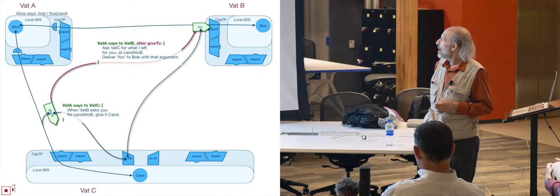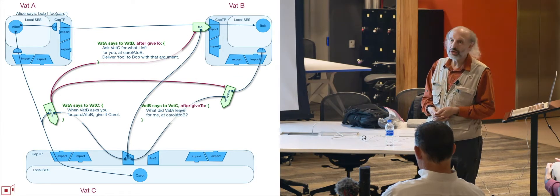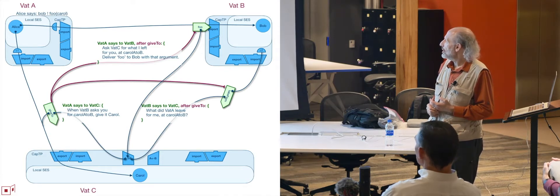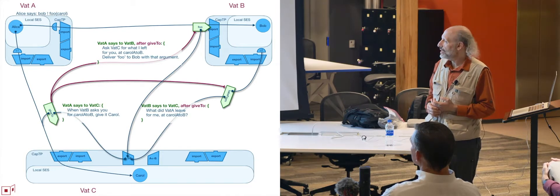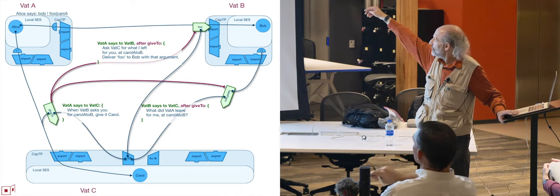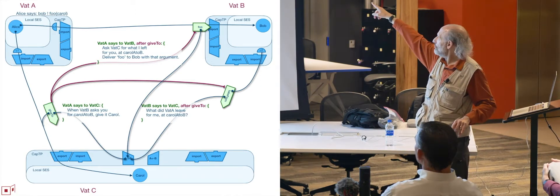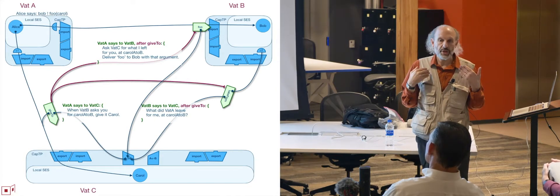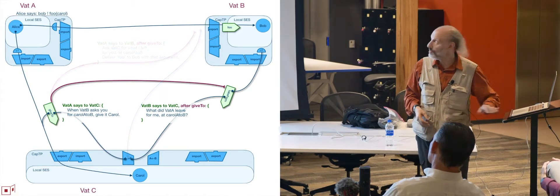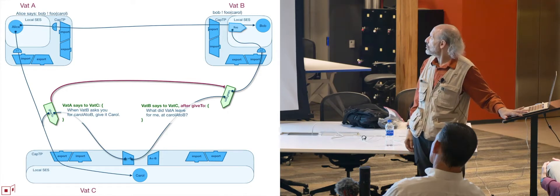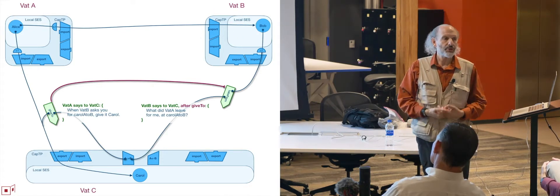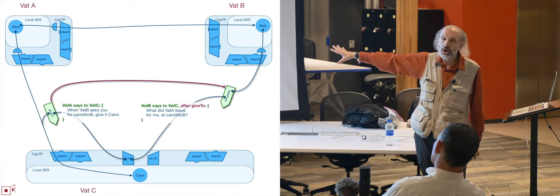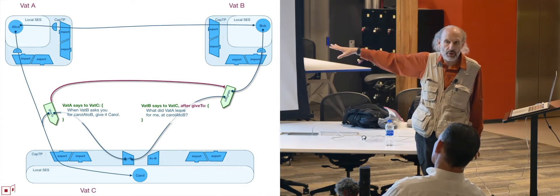Having serialized that message to eventually be delivered to VATC, VATA can now complete serializing and sending the foo message to VATB, saying: please ask VATC for what I left for you at the carol A-to-B index, and deliver the foo message to Bob with that argument. When that message arrives at VATB and VATB proceeds to un-serialize it, the first step is sending a corresponding take-from to VATC, asking what did VATA leave for me at carol A-to-B. Having sent this message off — even though it has not arrived yet — leaves behind a promise for what the result of the take-from will be. VATB can complete un-serializing the message into an object message, which it then delivers to Bob, and Bob can continue computing even though none of these messages have actually reached VATC yet. VATC could even be offline, with all these messages just accumulating in some store-and-forward infrastructure.